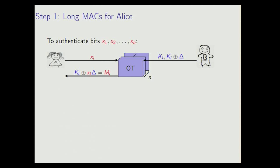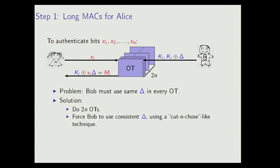The naive approach to doing this authentication would be to just have Alice input the bits that she wants to authenticate, and Bob would input the two possible MACs. And the oblivious transfer would then output the MAC that we need. However, we need for Bob to use the same global key delta here for each one of these N OTs. So we need some way to force him to do that because if he's actively corrupted, obviously, he could choose a new global key every time. This is our problem. And the solution is that we will actually just use this naive approach to authenticate twice as many bits as we need. And then we're going to use some cut and choose-like technique in order to force Bob to use consistent deltas.